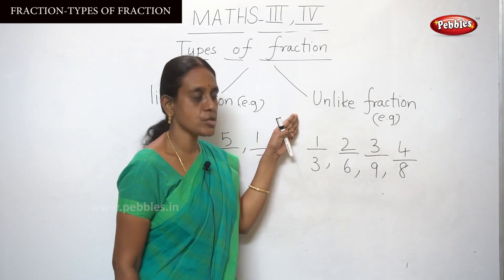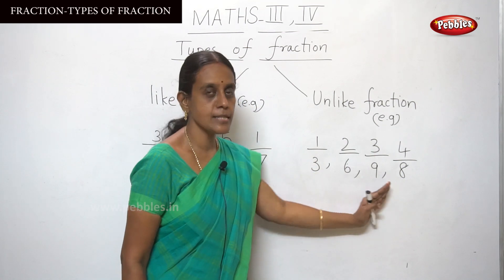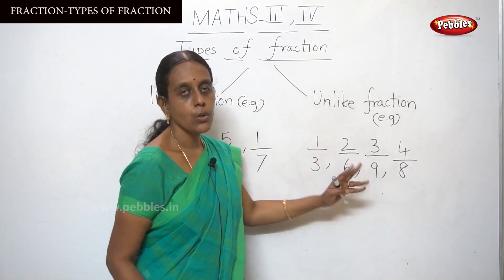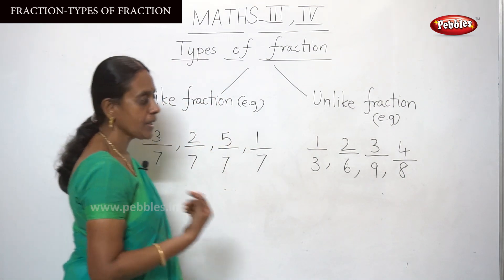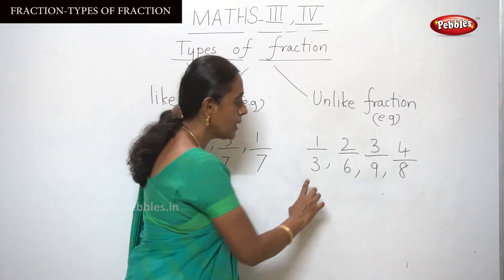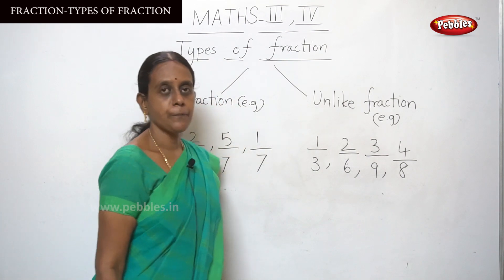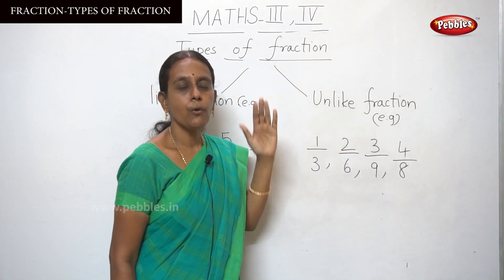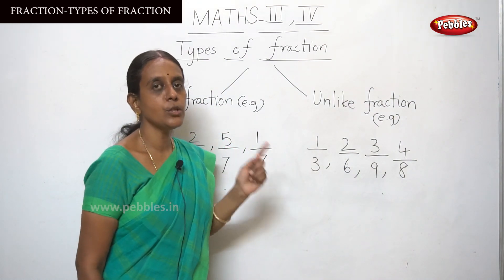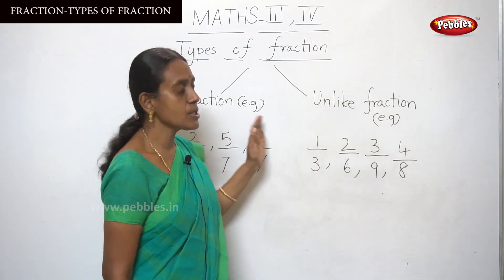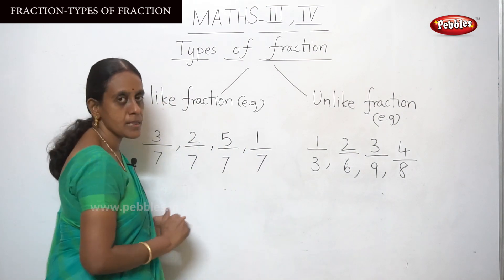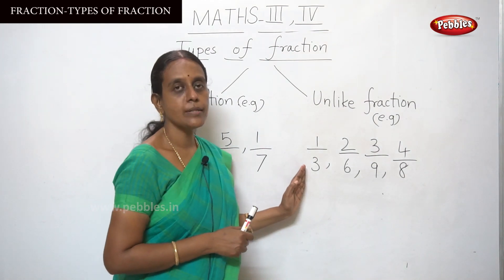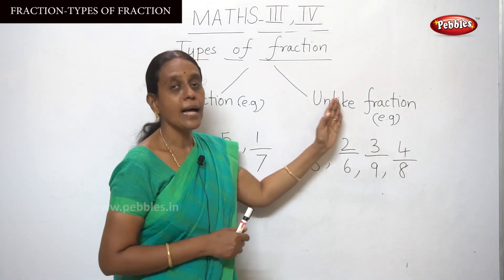For unlike fraction, observe the denominator numbers. Here the examples are 1 by 3, 2 by 6, 3 by 9, and 4 by 8. All the denominator numbers are different — 3, 6, 9, and 8 respectively. The denominators vary, so that is called unlike fraction. In summary: if the denominators are the same, it is a like fraction; if the denominators are different, it is an unlike fraction.